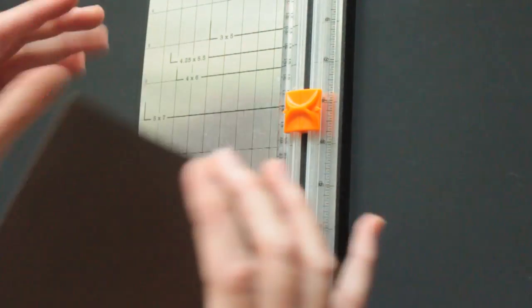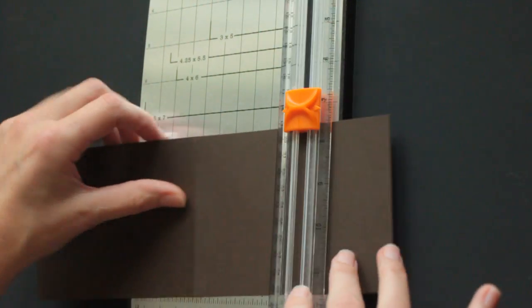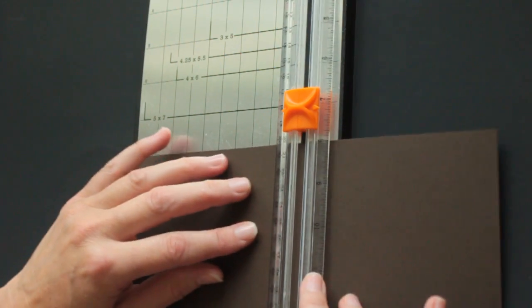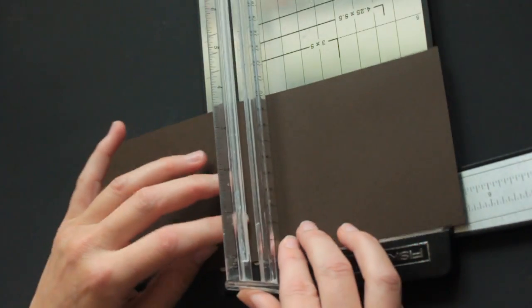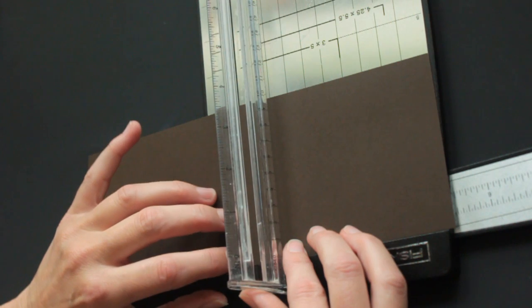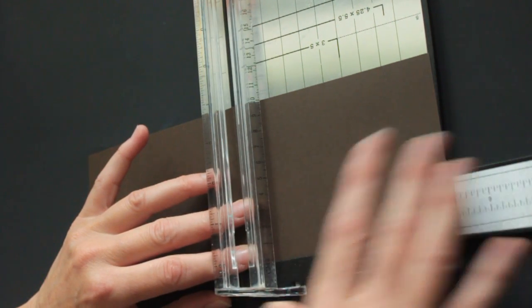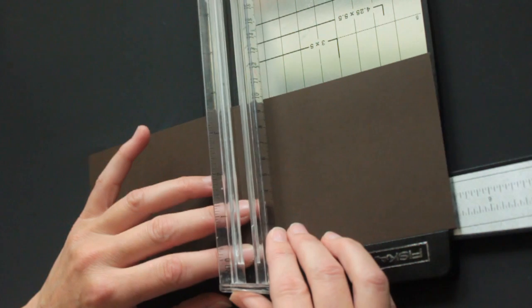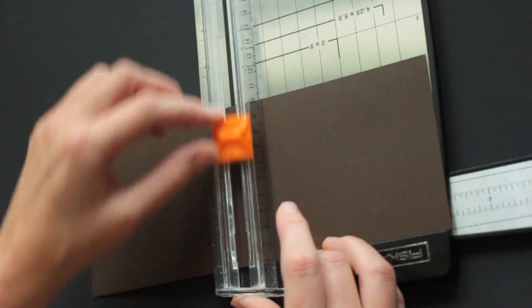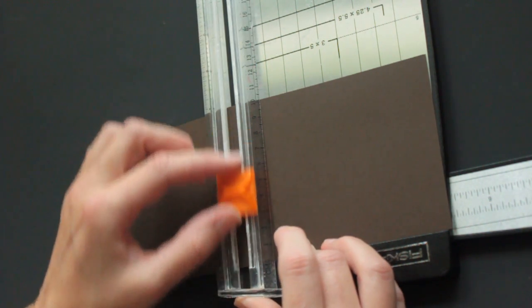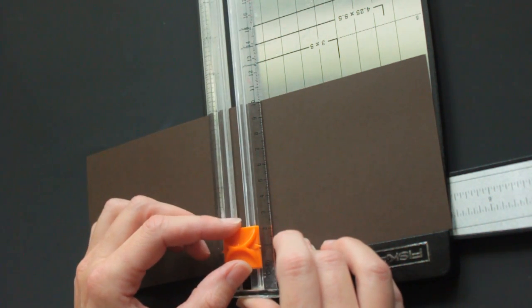Next, you will need a paper cutter, or you can use a craft knife and cutting mat, and you will cut a slit over the score line that you created. I'm just going to cut an eighth of an inch on each side from that score line, so I have a quarter of an inch cut. So, I line it up with 5 1/8, and I cut from 3 1/8 ends in.